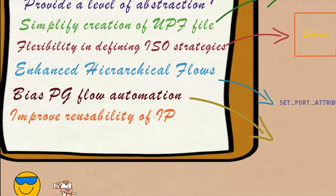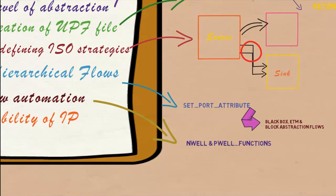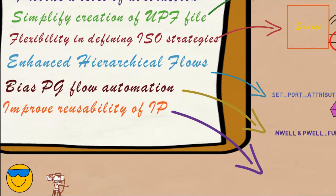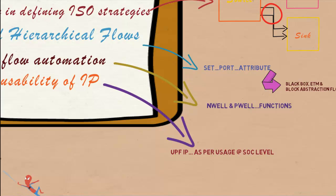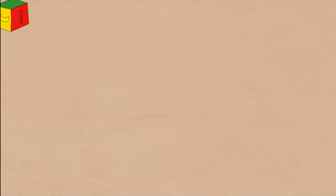Usage of supply set functions, N-Val and P-Val, automate the bias PG flows. In supply set flow, the UPF IPs can be refined as per the usage at SOC level.